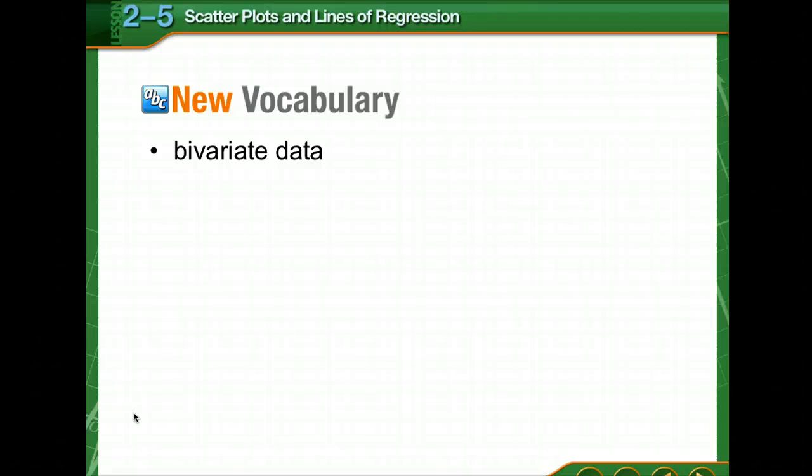We have some new vocabulary, quite a bit. Bivariate data is data with two variables, such as a year and a number of visitors or something like that. Now a set of bivariate data are graphed as ordered pairs in a coordinate plane, and it's called a scatter plot or a dot plot.